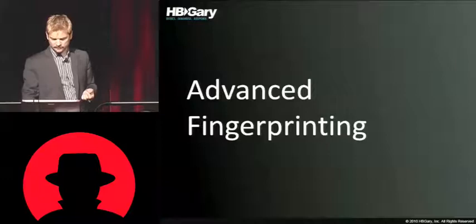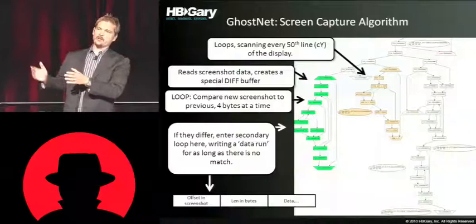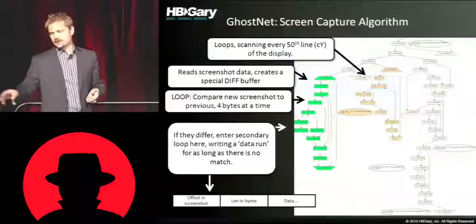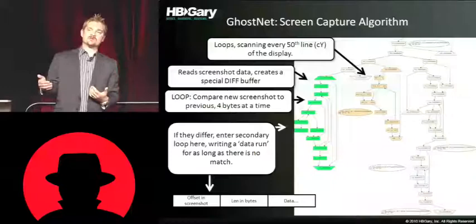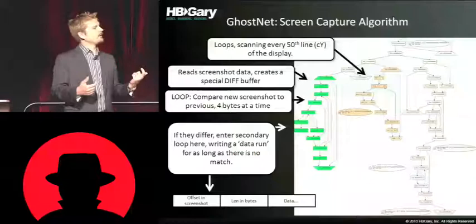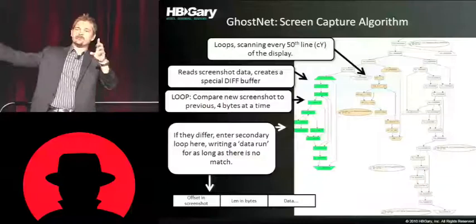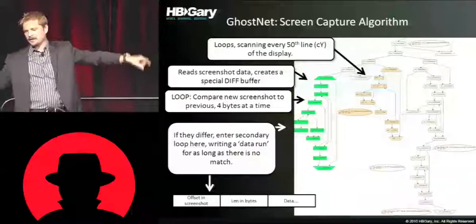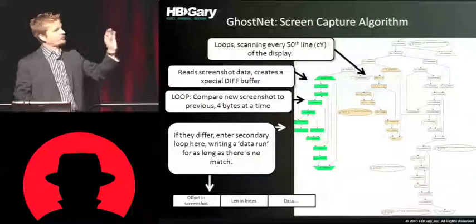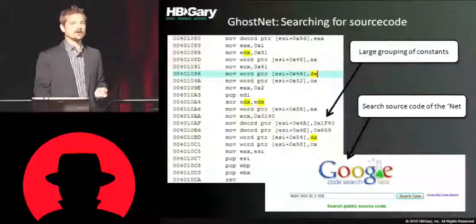This is GhostNet again — going to the algorithm level I was talking about, where the algorithm is hardly ever changed because it's so hard to get software to work right. This is the algorithm that does remote screen scraping of your box with Ghost RAT. Every 50th line on the display it counts by 50, then takes a diff against the previous snapshot so it's not going to send all the raw data again. It compares those to the previous one four bytes at a time. If they differ, it goes into a secondary loop making a data run until the difference is resolved, putting into a data structure the offset in the screenshot, the length, and the actual pixel data, down-sampled into black and white or grayscale. All of that is so specific that if you search your enterprise for it, you're going to find GhostNet. They're not going to rewrite that every single morning.